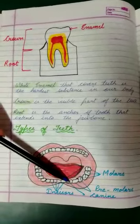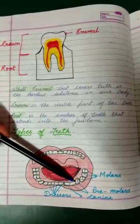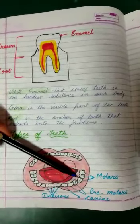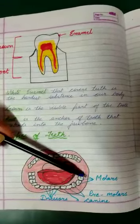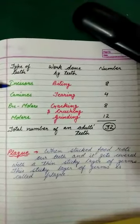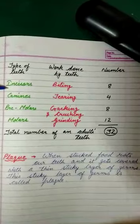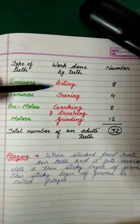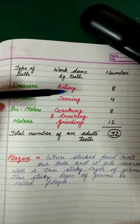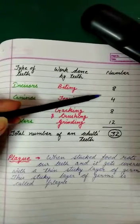Incisors are the front teeth — 4 in the upper jaw and 4 in the lower jaw. These are used for biting and cutting. For example, when you cut an apple, the front teeth that do the cutting are the incisors. So incisors are 8 in total: 4 up and 4 down.